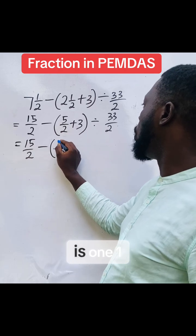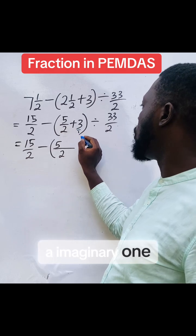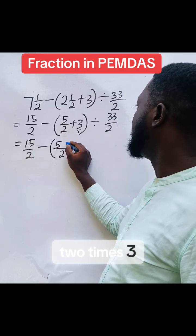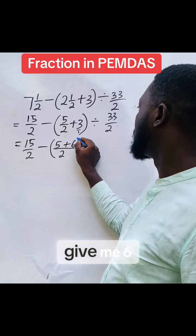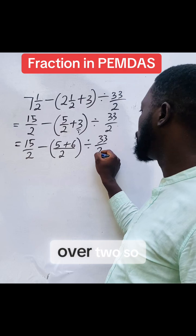2 into 2 is 1, 1 times 5, we'll have 5. Here is the imaginary 1. 2 into 1 is 2, 2 times 3, give me 6. Right? Divide by 33 over 2.